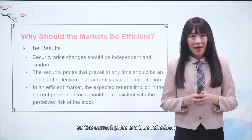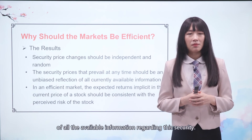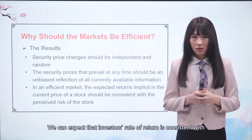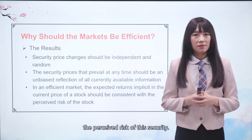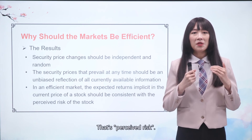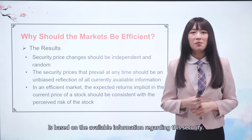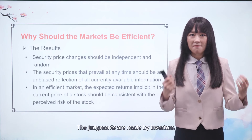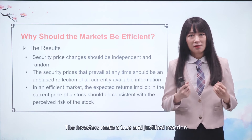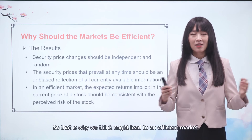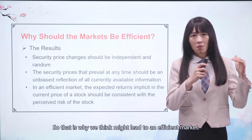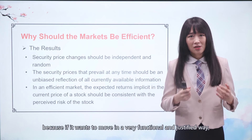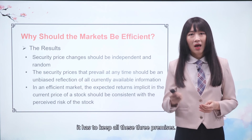Lastly, we can expect that investors' rate of return is consistent with the perceived risk of the security. Pay attention to the word 'perceived risk' — it is based on the available information regarding the security. Investors make a true and justified reaction to the information they receive. That is why we think this might lead to an efficient market, and the market needs to be efficient if it wants to move in a very functional and justified way.